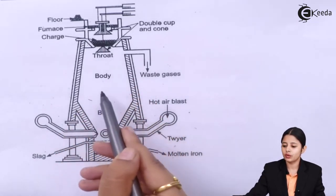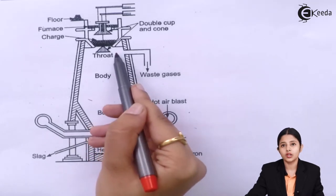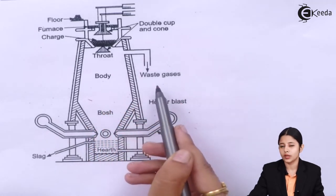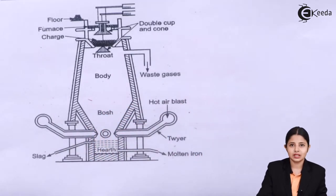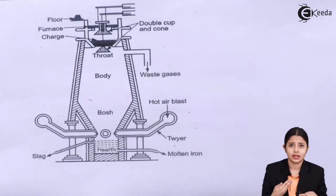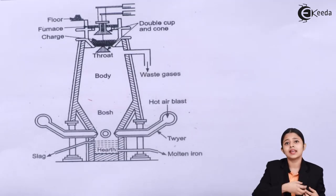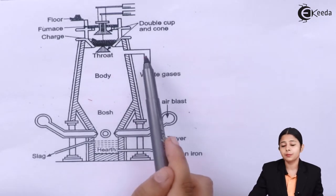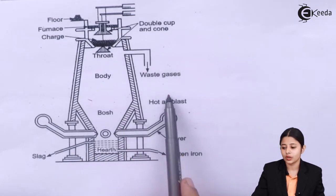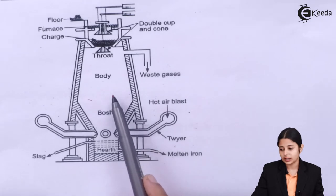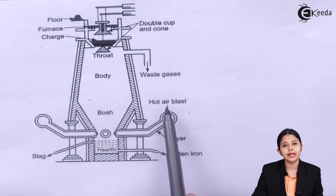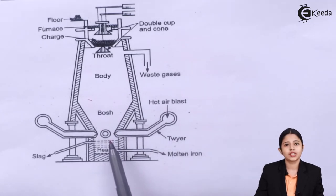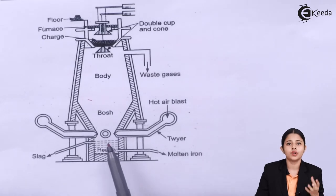This is the entire body of the blast furnace. We have all the waste gases coming out over here. What happens basically is, inside the blast furnace, due to a lot of heat, there are combustion reactions taking place. All these reactions evolve a lot of gas and all these gases have to come out. There is a pipe which helps in getting out the waste. There is also a hot air blast at the bottom which helps in the purification of the powdered ore.